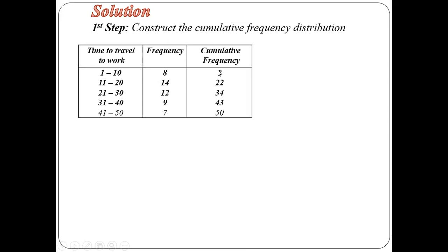To construct the cumulative frequency, the first value for the frequency becomes the first value of the cumulative frequency. The second value, we take the second year plus the first, gives us 22. 12 plus 22 equals 34, 9 plus 34 equals 43, 7 plus 43 gives 50. From there we have our cumulative frequency.